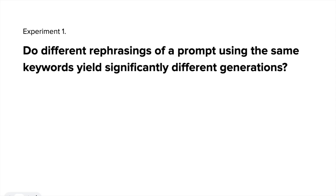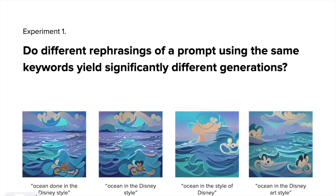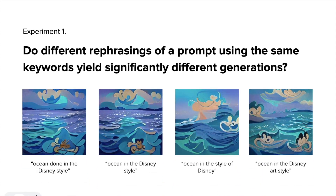In the first experiment, we tested different phrasings of prompts to understand how different orderings of keywords, function words, and filler words would affect generation quality. We wanted to understand if users would need to try many different permutations of the same prompt to find the best wording. For example, would a generation from 'an ocean in the Disney style' be significantly different from a different permutation, 'an ocean in the style of Disney'?